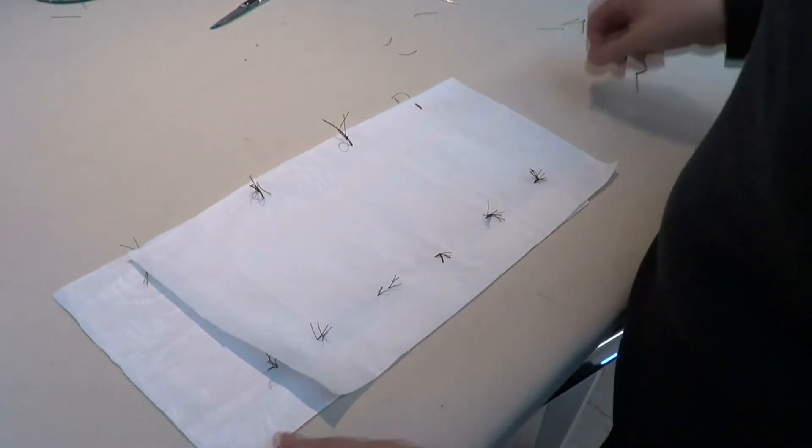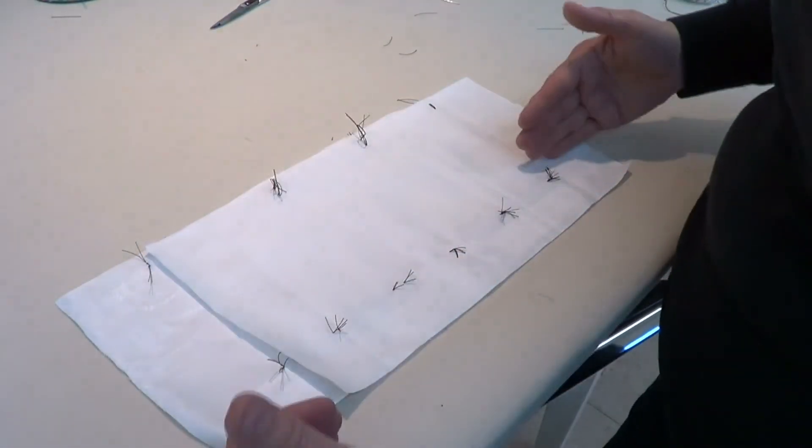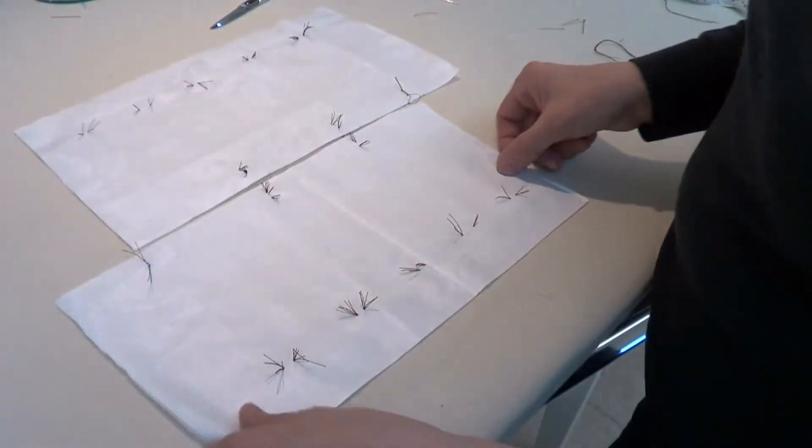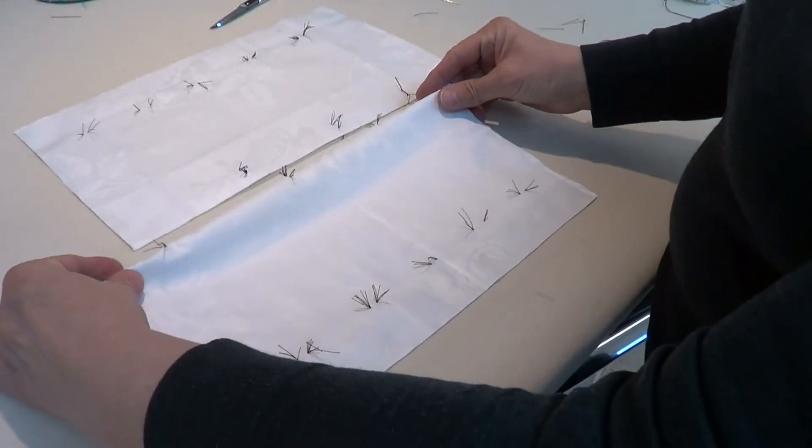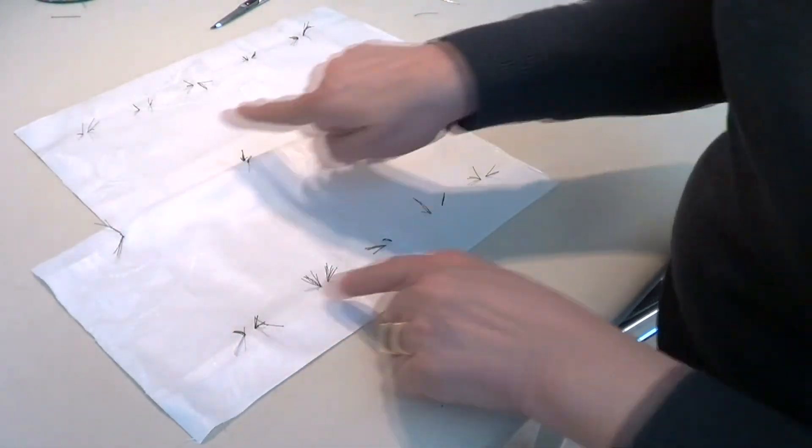Now they're different than tailor's tacks because they go perpendicular to the cut edge rather than parallel. So now I know when I sew this together and I have my seam allowance planned, all of those points must meet up.